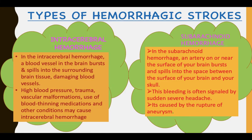The types of hemorrhagic strokes are intracerebral hemorrhage and subarachnoid hemorrhage. In intracerebral hemorrhage, a blood vessel in the brain bursts and spills into the surrounding brain tissue, damaging the blood vessels. High blood pressure, trauma, vascular malformations, use of blood-thinning medications, and other conditions may cause intracerebral hemorrhage.